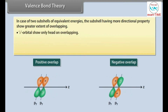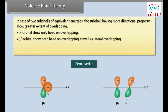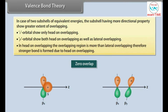S orbitals show only head-on overlapping, while P orbitals show both head-on overlapping as well as lateral overlapping. In head-on overlapping, the overlapping region is more than in lateral overlapping. Therefore, a stronger bond is formed due to head-on overlapping.